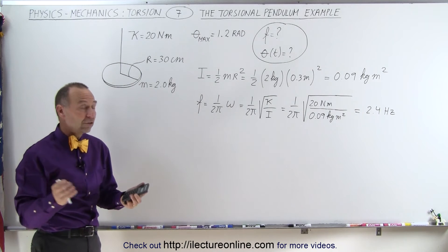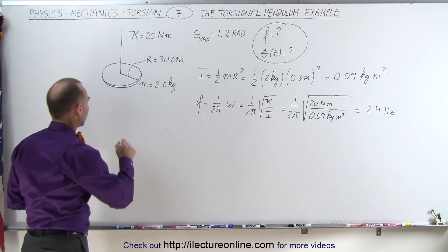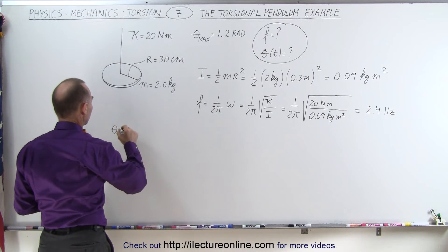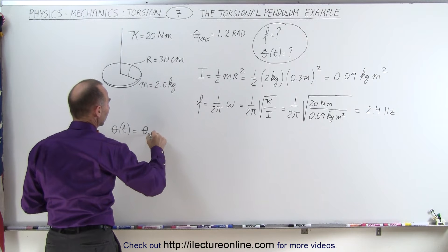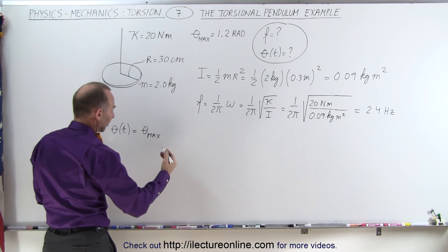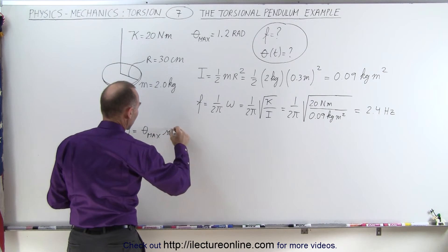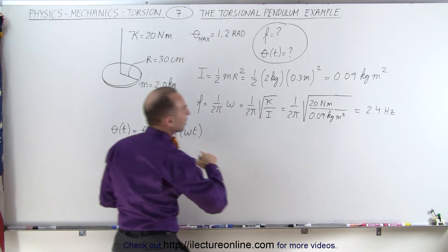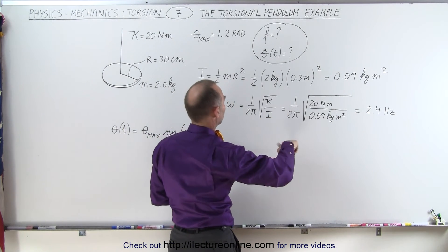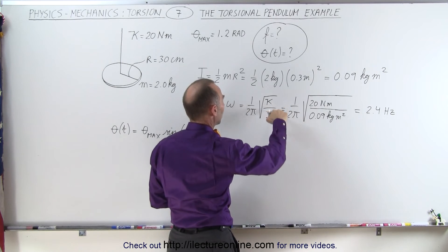Next, we want to find an equation that describes that motion. The solution to the differential equation as a function of time will equal the maximum displacement times either the sine or cosine of ω t, where ω equals the square root of κ over I.